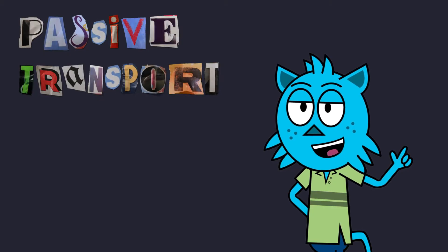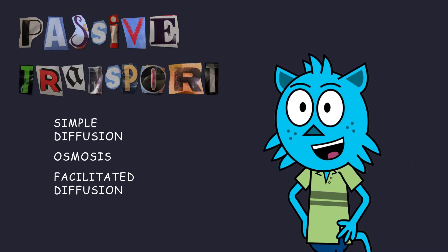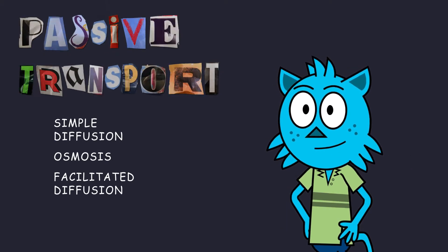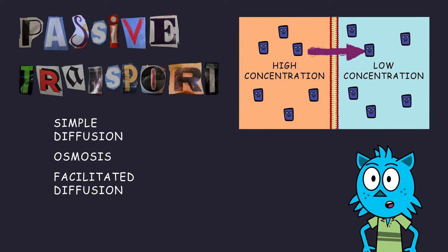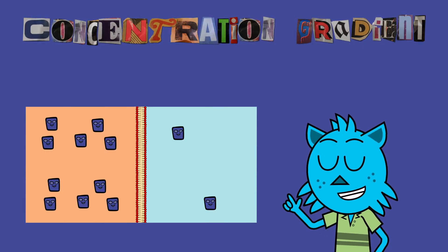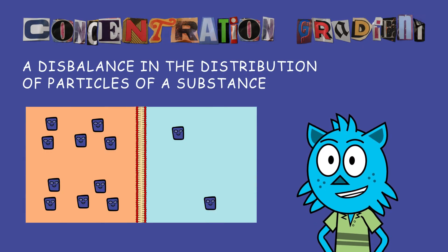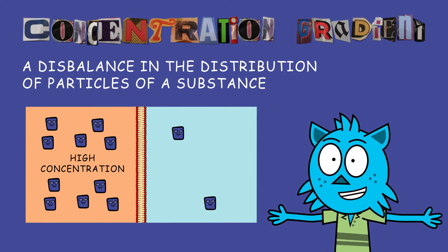Passive transport includes simple diffusion, osmosis, and facilitated diffusion. For all three types of passive transport, transported substances go from high to low concentration. A concentration gradient means that there is a disbalance in the distribution of particles of a substance, so there is an area of higher concentration and an area of lower concentration.